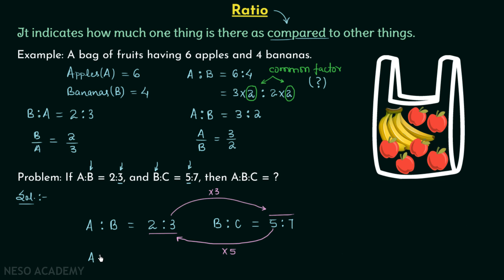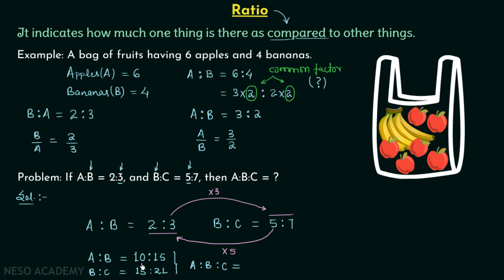So the new A ratio B is equal to 10 ratio 15 — 2 multiplied by 5 is 10. And the new B ratio C is equal to 15 ratio 21 — 3 multiplied by 5 is 15 and 3 multiplied by 7 is 21. From here we can find A ratio B ratio C very easily: A is 10, B is 15, and C is 21.